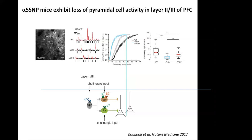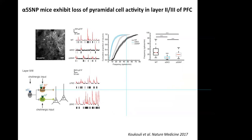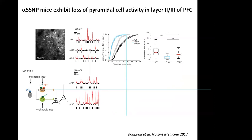In addition, the alpha-7 nicotinic subunits are expressed in somatostatin and parvalbumin interneurons, whereas the beta-2 nicotinic subunits are expressed only by somatostatin interneurons. To further study this circuit, I used knockout mice for the alpha-7 or beta-2 nicotinic subunits, and found that pyramidal cell activity in these knockout mice was increased compared to wild-type activity.